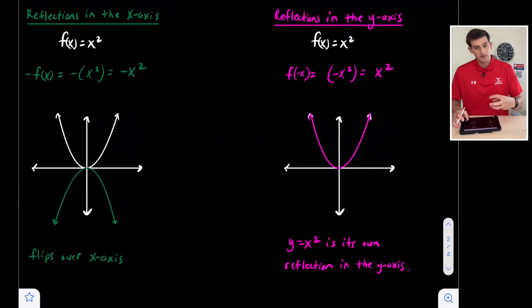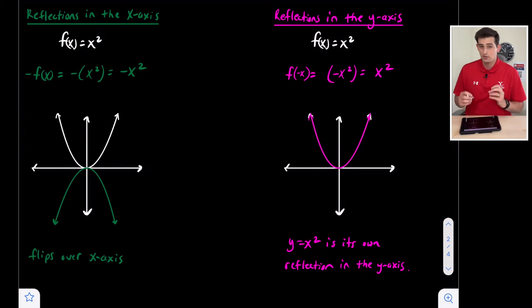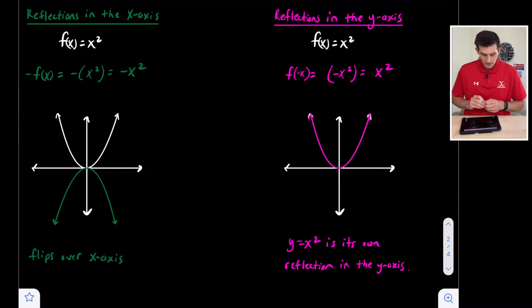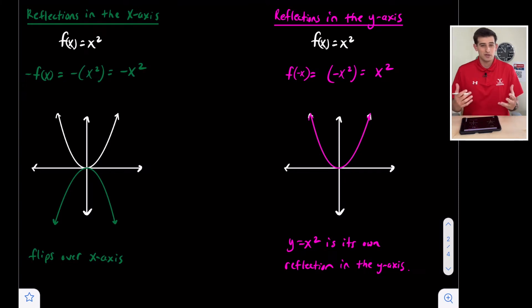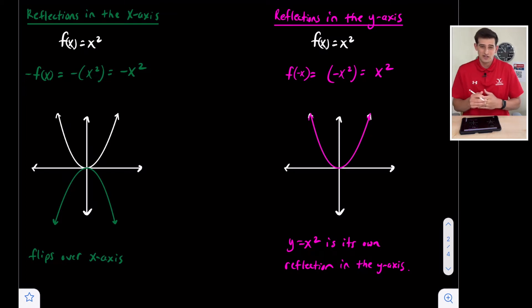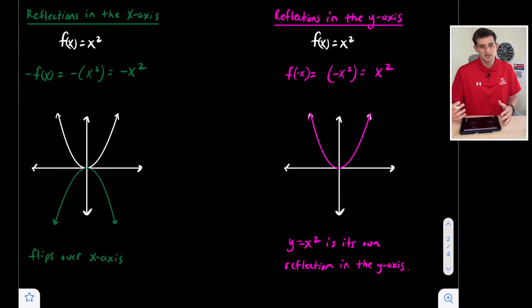Now let's talk about reflections — and we'll cover reflections, then stretches and shrinks, before combining them in our last examples. The x-axis reflection is what you'll see most often because it actually does something to the parent function, whereas the y-axis reflection of the parent function doesn't really change anything about the graph.